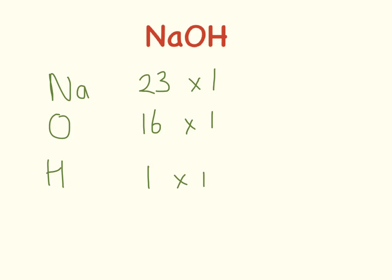Now we have 1 sodium, 1 oxygen and 1 hydrogen. So 23 times 1 is 23, 16 times 1 is 16 and 1 times 1 is 1.